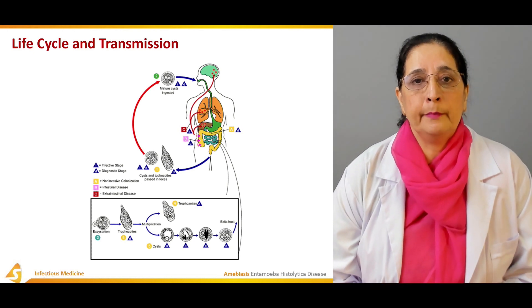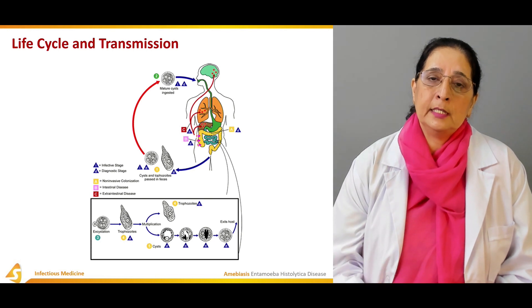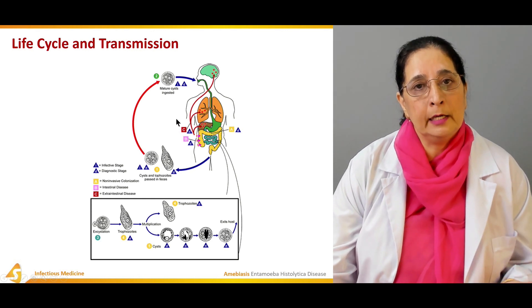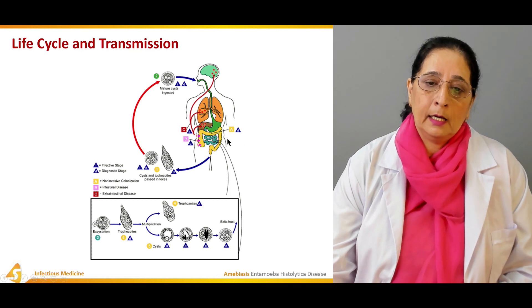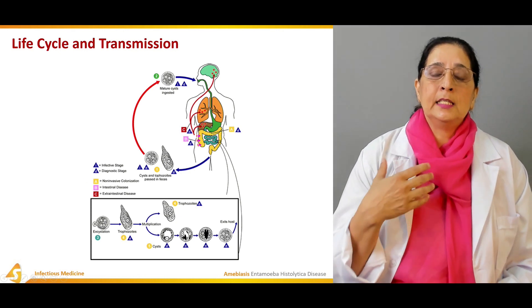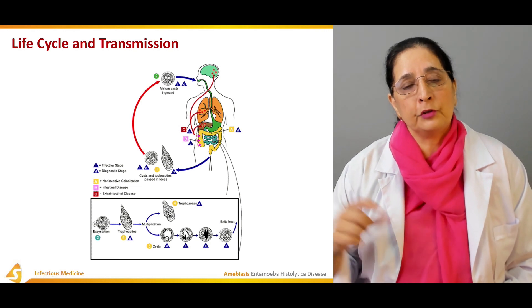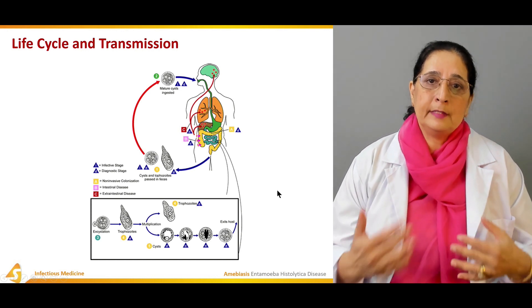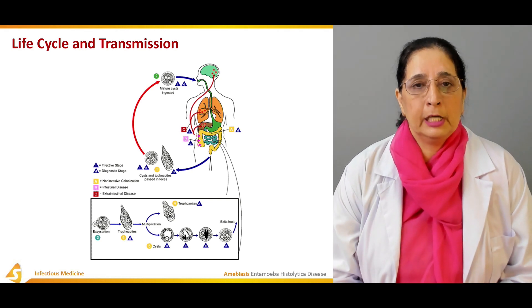In summary, cysts of Entamoeba histolytica pass in feces, are ingested, and pass into the intestine where they cause intestinal disease. From there the infection can spread to the liver and lungs, causing liver abscess and lung disease. After intestinal disease, cysts pass again into feces, are ingested, and the encystation stage repeats — trophozoites develop, mature cysts form, and are released again.